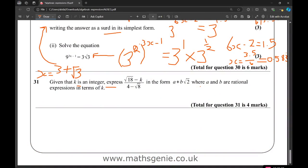Given that K is an integer, express root 18 minus K over 4 minus root 8 in the form A plus B root 2, where A and B are rational in terms of K. So again, let's rationalize by multiplying top and bottom by the conjugate root 18. Why is it doing that for me now? I have no idea why it's being slanted.